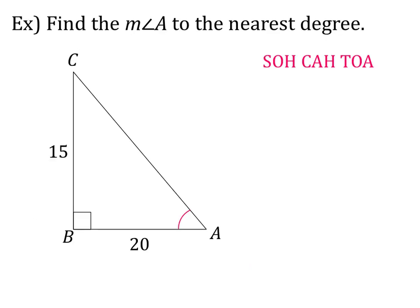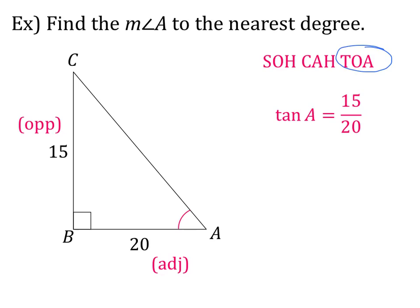Let's try an inverse example problem. It says find the measure of angle A to the nearest degree. The first thing we want to do is write down SOH CAH TOA and label the parts of our triangle. Focused on angle A: the relationship between angle A and 15 is opposite, so write OPP next to 15. Then angle A has an adjacent relationship with 20, so write adjacent next to 20.